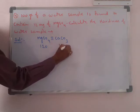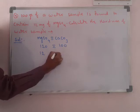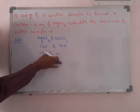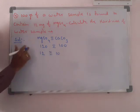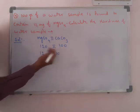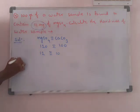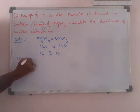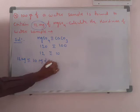MgSO₄ has molecular weight 120, and CaCO₃ is 100. Given 12 milligrams of MgSO₄, by proportion we get 10 milligrams of CaCO₃. So 12 milligrams of MgSO₄ is equivalent to 10 milligrams of CaCO₃.